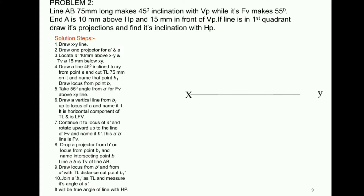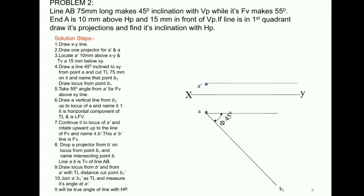We start with the XY line. Point A is located 10mm above HP for the front view, and 15mm in front of VP for the top view. We place point A. The true length is used here. At 45 degrees in the top view and 55 degrees in the front view, we add a line at A-dash at 55 degrees.